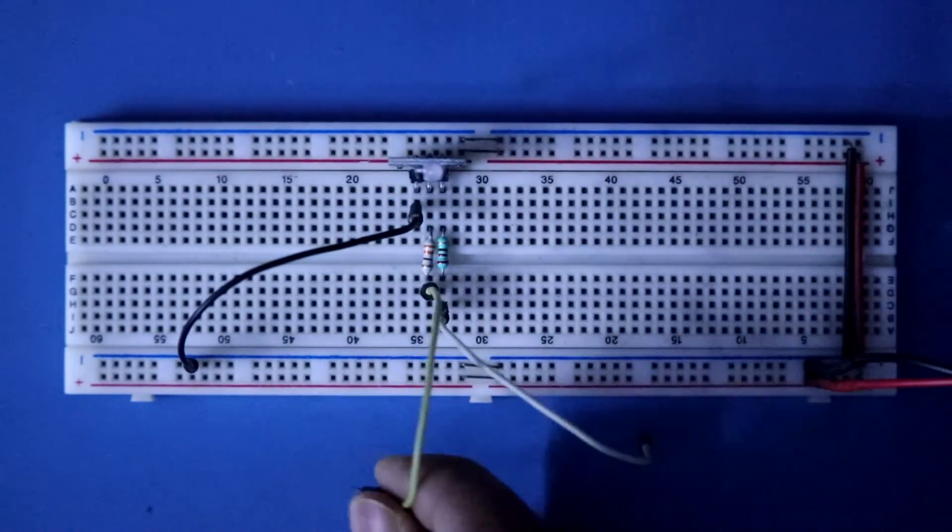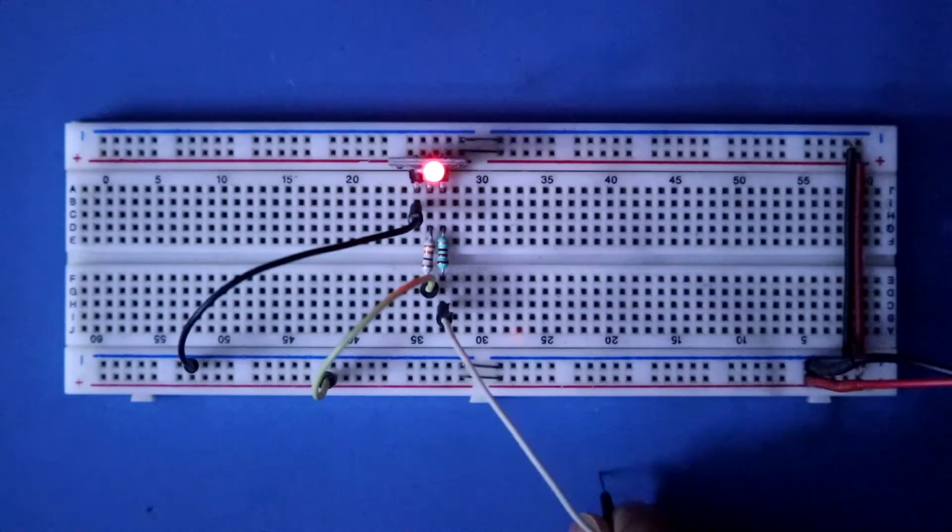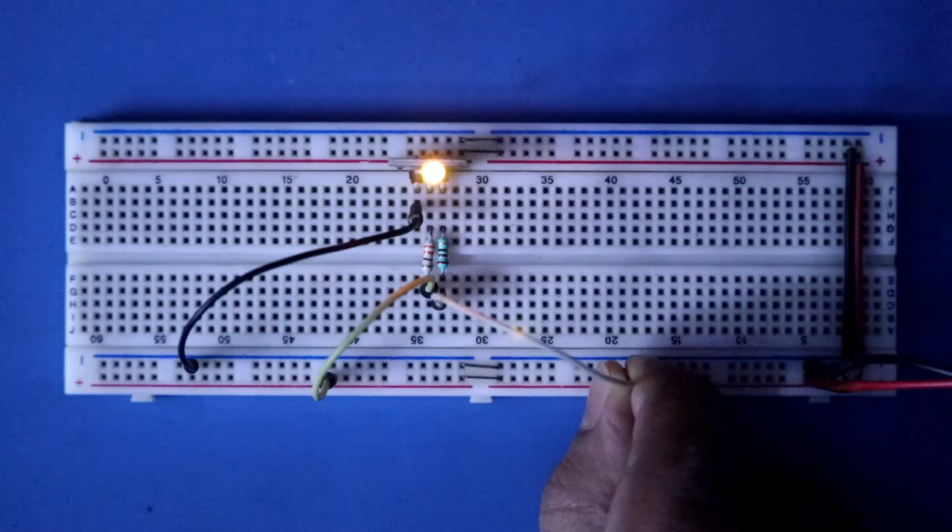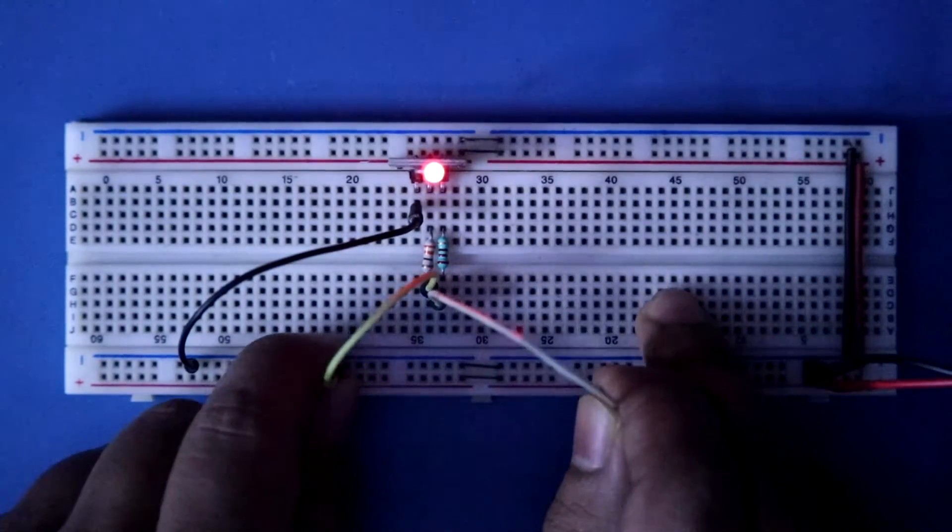This is red pin. It is red. If I put both the pin to the positive rail, it is glowing as yellow because red plus green equal to yellow. So, this is how two color LED works.